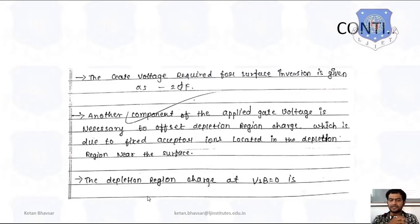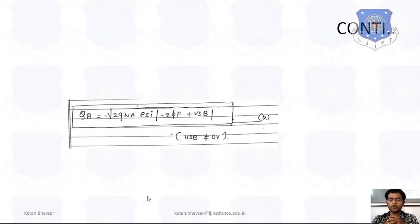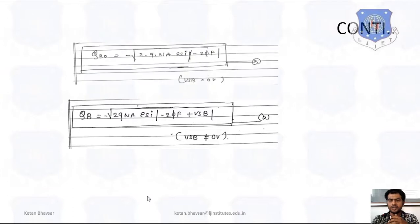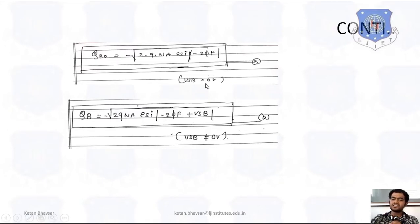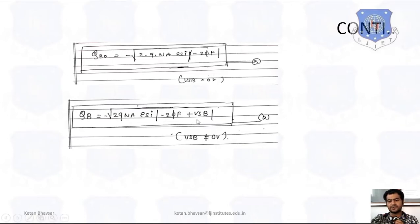Considering near the surface, the depletion charge with Vsb equal to zero gives: Qb equals −√(2·q·NA·εSi·|−2φF + Vsb|). We consider two scenarios: Vsb equal to zero and Vsb not equal to zero. QbO, for the oxide case, equals −√(2·q·NA·εSi·|−2φF|), where q is charge, NA is the number of acceptors, and εSi is the permittivity of silicon — using −2φF from the surface inversion result. If Vsb is not equal to zero, we must add Vsb into this equation.